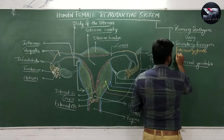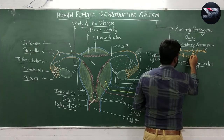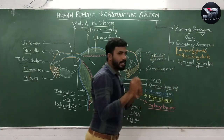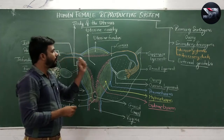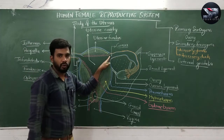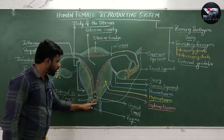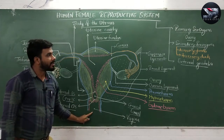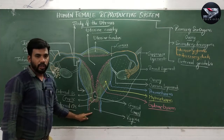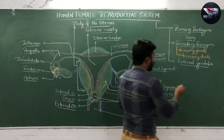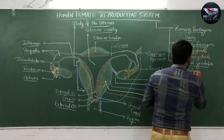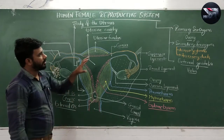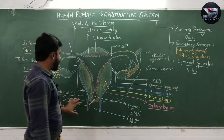The second type of secondary sex organs are the accessory ducts. These accessory ducts include the oviduct, uterus, cervix, and vagina. External genitalia, also called the vulva, will be discussed in the next lecture. So in today's lecture I am going to explain mainly the accessory ducts of the female reproductive system.